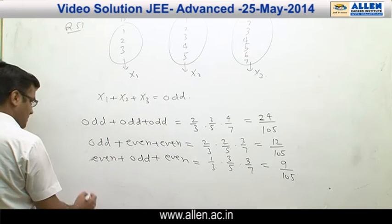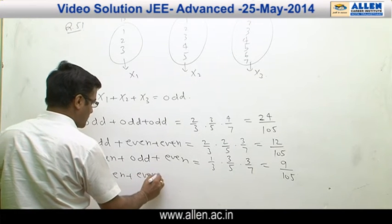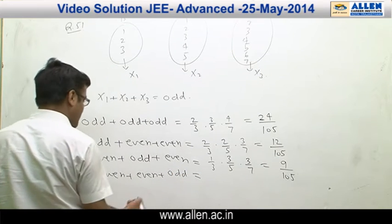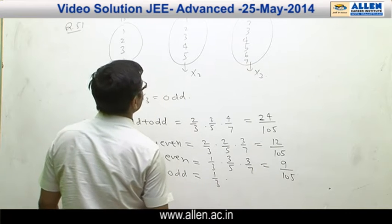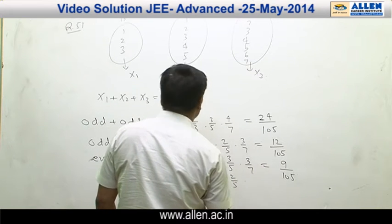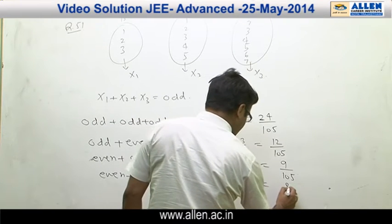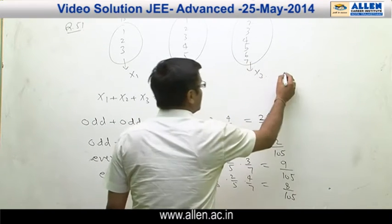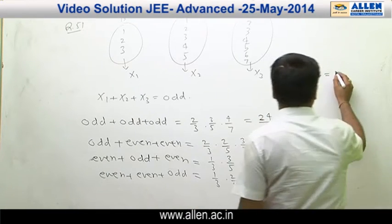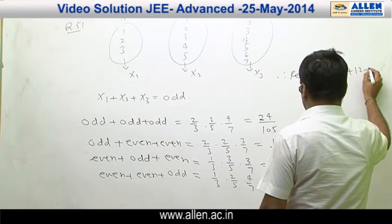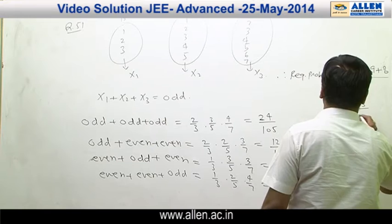And the last case: when we take even number from B1, even from B2, and odd from B3. Even from B1 is 1/3, even from B2 is 2/5, and odd from B3 is 4/7. The probability in this case is 8/105. Therefore, the required probability is the sum of all these: 24 + 12 + 9 + 8 divided by 105, which becomes 53/105.